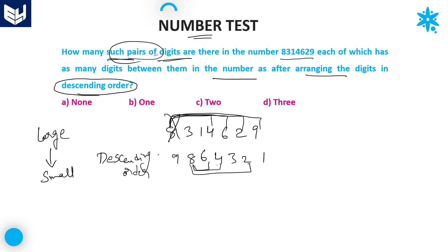Now with 3: between 3 and 1 — 0 here, 1 in descending. Between 3 and 4 — side by side, no. Between 3 and 6 — 2 here, only 1 there. Between 3 and 2 — 3 here, side by side there. Between 3 and 9 — 4 digits here, only 3 there. So with 3 also, no pair is formed.